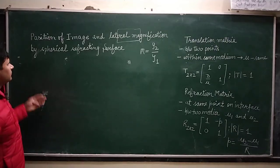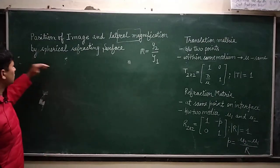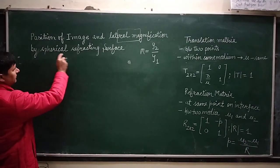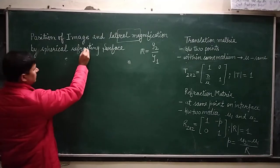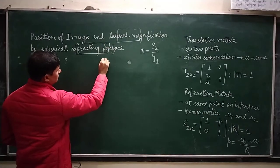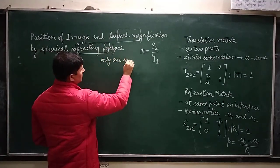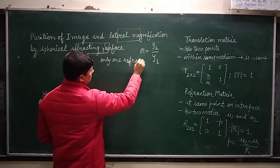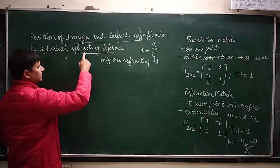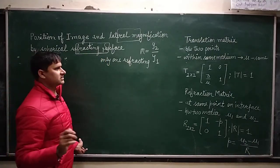Today we will discuss lateral magnification of the image found by a refracting surface. We have only one refracting surface, because if we have more than one refracting surface, then it will create an optical system.